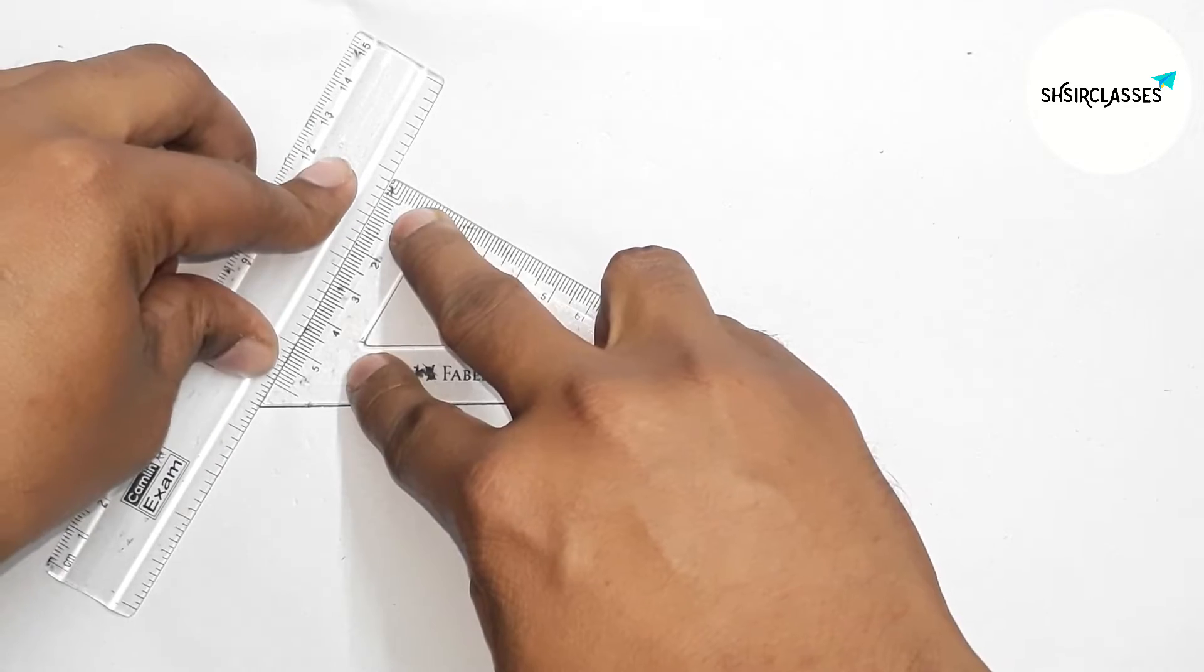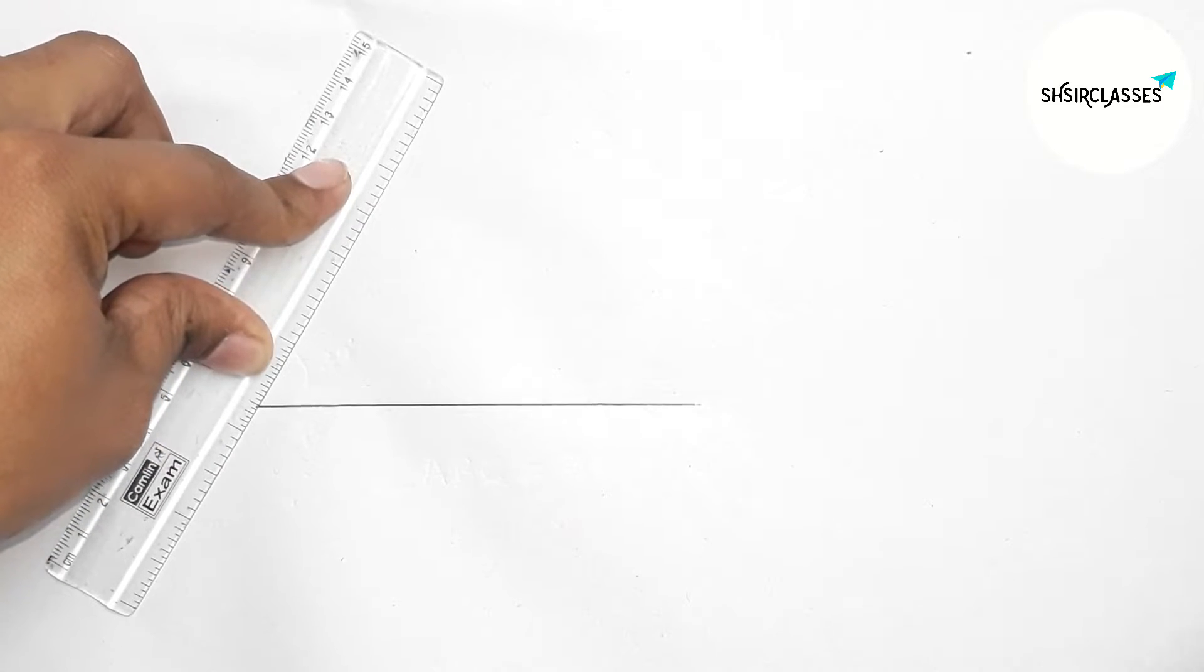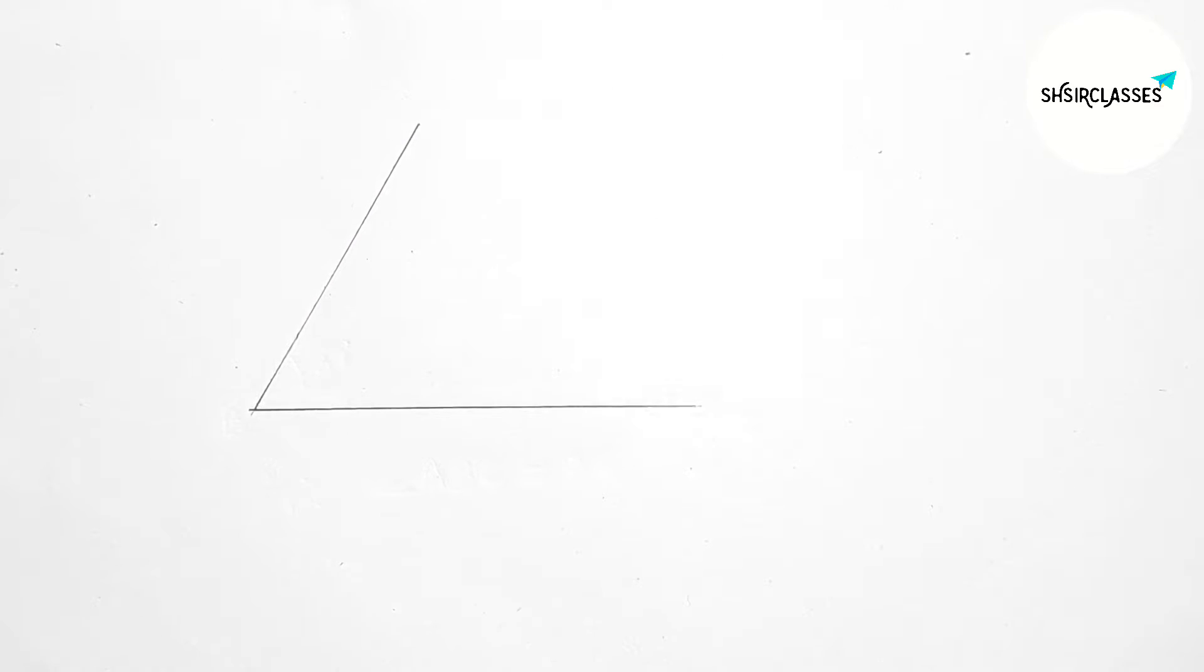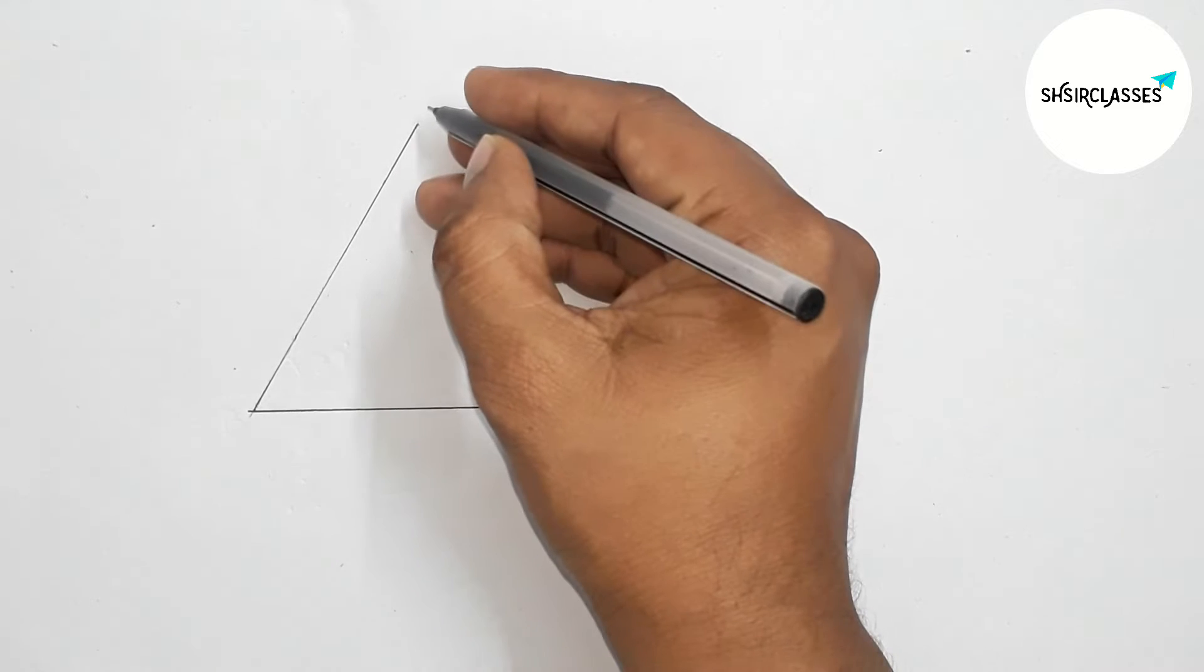So first putting the ruler perfectly and putting a scale perfectly. And this gives 60 degree angle. So joining this.